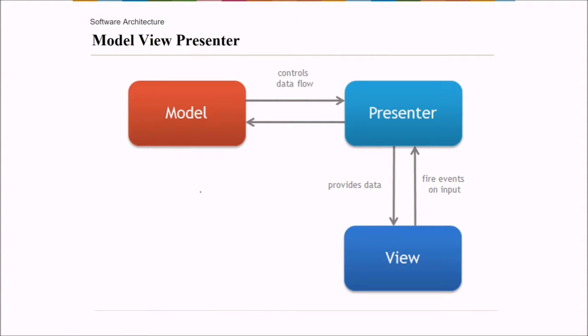There is one to one relationship between the presenter and the view. So how it is happening? Presenter is the key. Model, it controls data flow. And the view. Presenter provides the data. View fires the events on input.